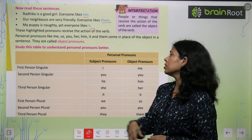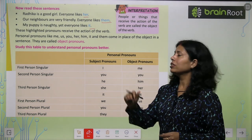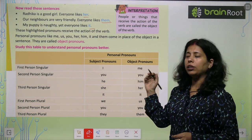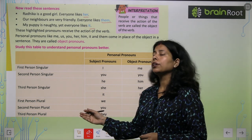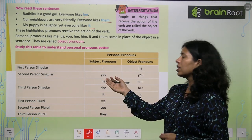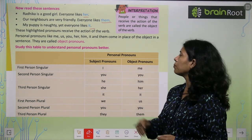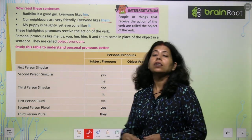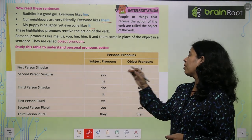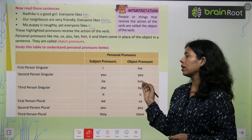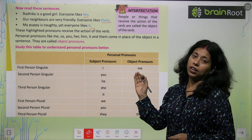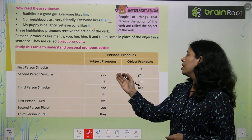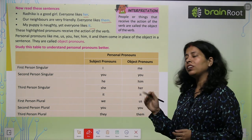First person singular: subject pronoun is I, object pronoun is me. Second person singular: subject pronoun is you, object pronoun is you. Third person singular: he is the subject pronoun, him is the object; she is the subject pronoun, her is the object; it remains it for both.